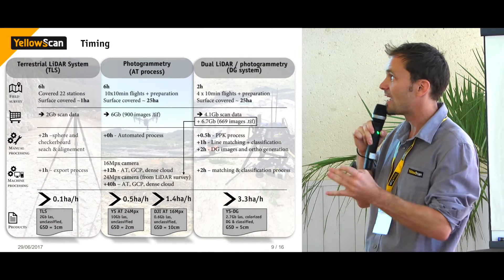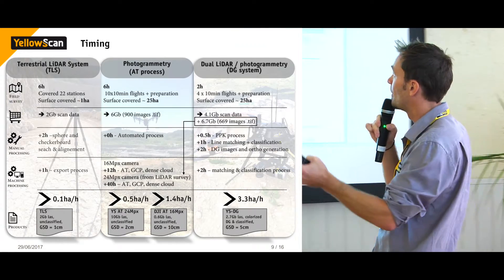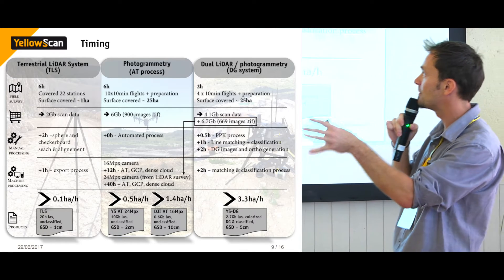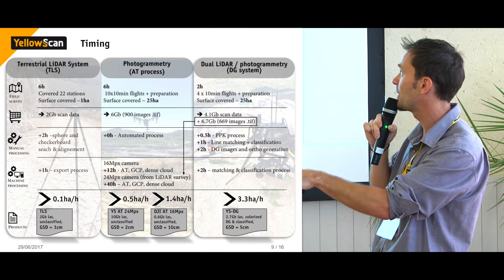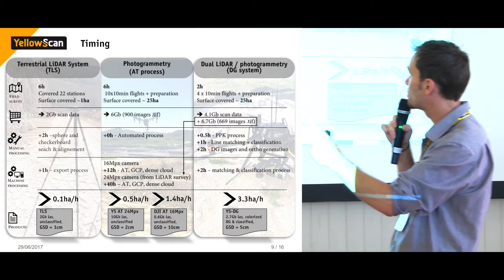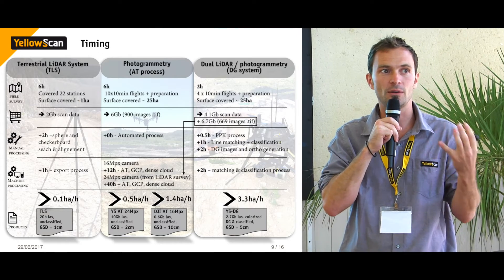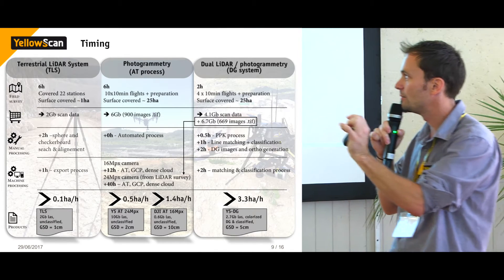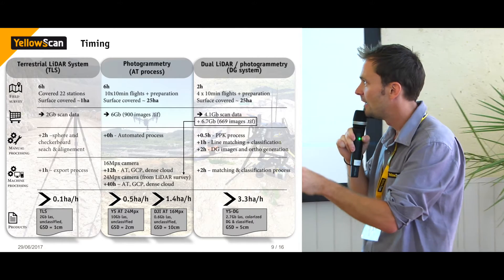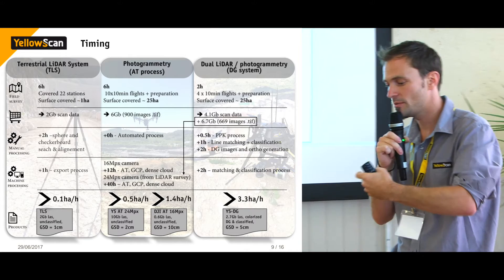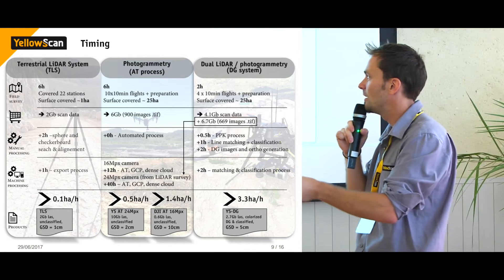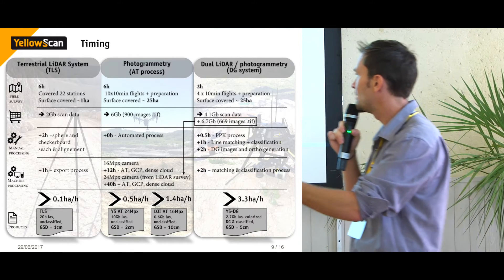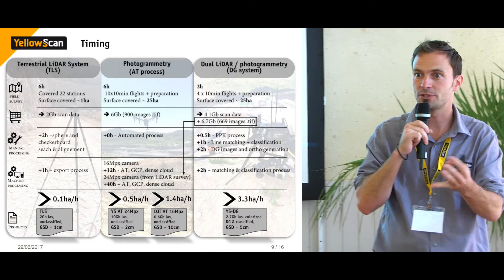In terms of timing and operations, looking at the three methods: field operation time, field survey time spent directly in the field, and surface covered. Then the products generated — how much data was produced. Then manual processing time, literally clicking buttons and manipulating software. And machine processing time with no operator involvement.